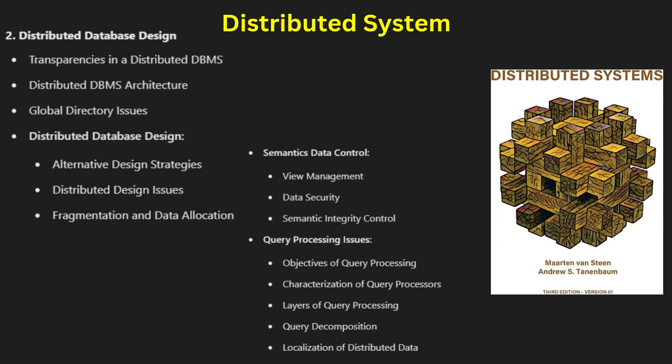Hello guys, welcome back to MacOutSmasher, your go-to platform for mastering distributed systems. In this video we will explore chapter 2: Distributed Database Design in detail. We will discuss transparency, architecture, global directories, and design strategies. You will also learn about fragmentation, data allocation, and semantic data control. Efficient database design is crucial for ensuring scalability, reliability, and optimal performance.